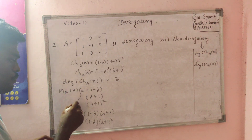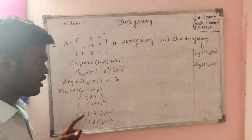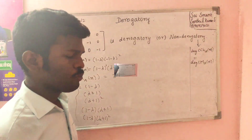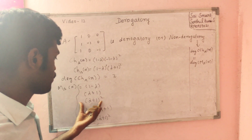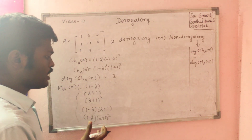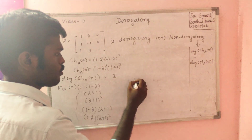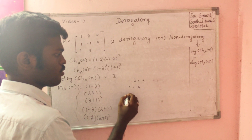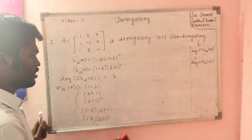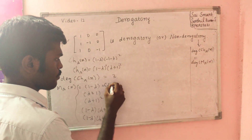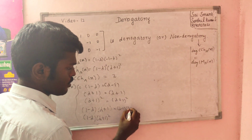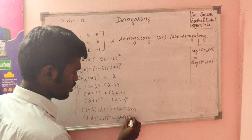Now we find the minimum polynomial. The possible candidate factors are (1 minus lambda) and (lambda plus 1). The five candidates for the minimum polynomial are: (1 minus lambda), (lambda plus 1), (lambda plus 1) squared, (1 minus lambda)(lambda plus 1), and (1 minus lambda)(lambda plus 1) squared.